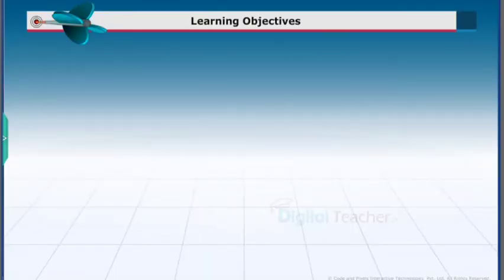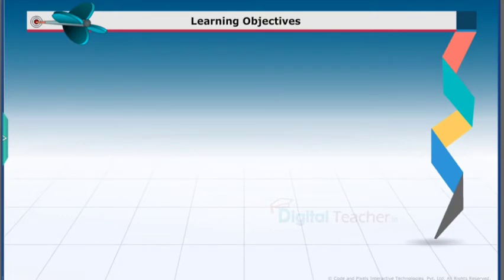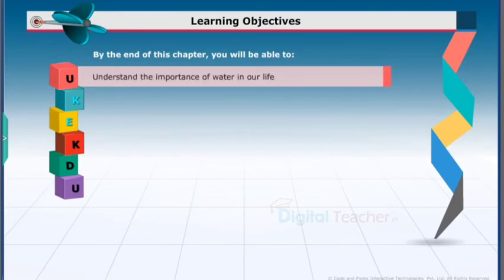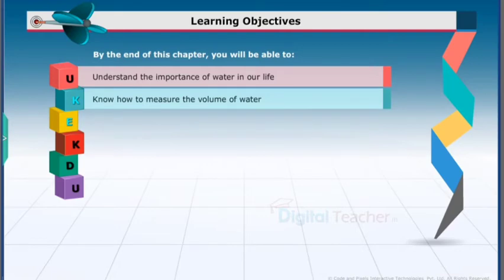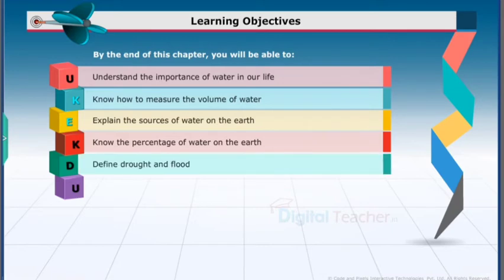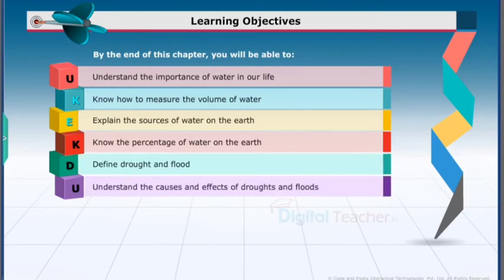Learning Objectives. By the end of this chapter, you will be able to define drought and flood, and understand the causes and effects of droughts and floods.